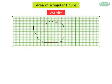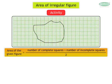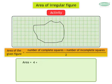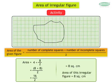Number 4 — count the number of incomplete squares. There are 8 incomplete squares. Area of the given figure is equal to number of complete squares plus number of incomplete squares divided by 2, which equals 4 plus 8 divided by 2, equals 4 plus 4, equals 8 square centimeters. The area of this irregular figure is 8 square centimeters.